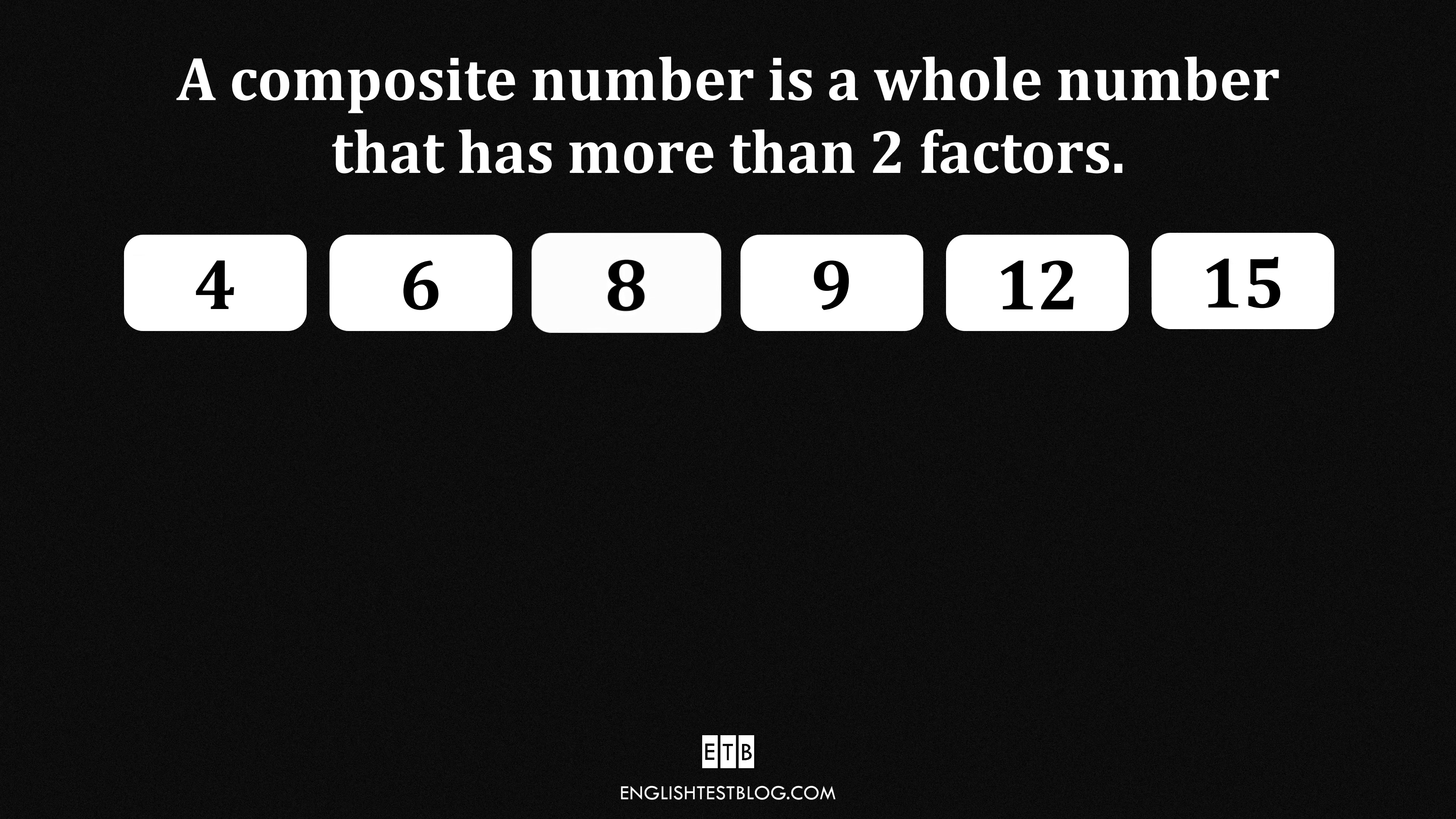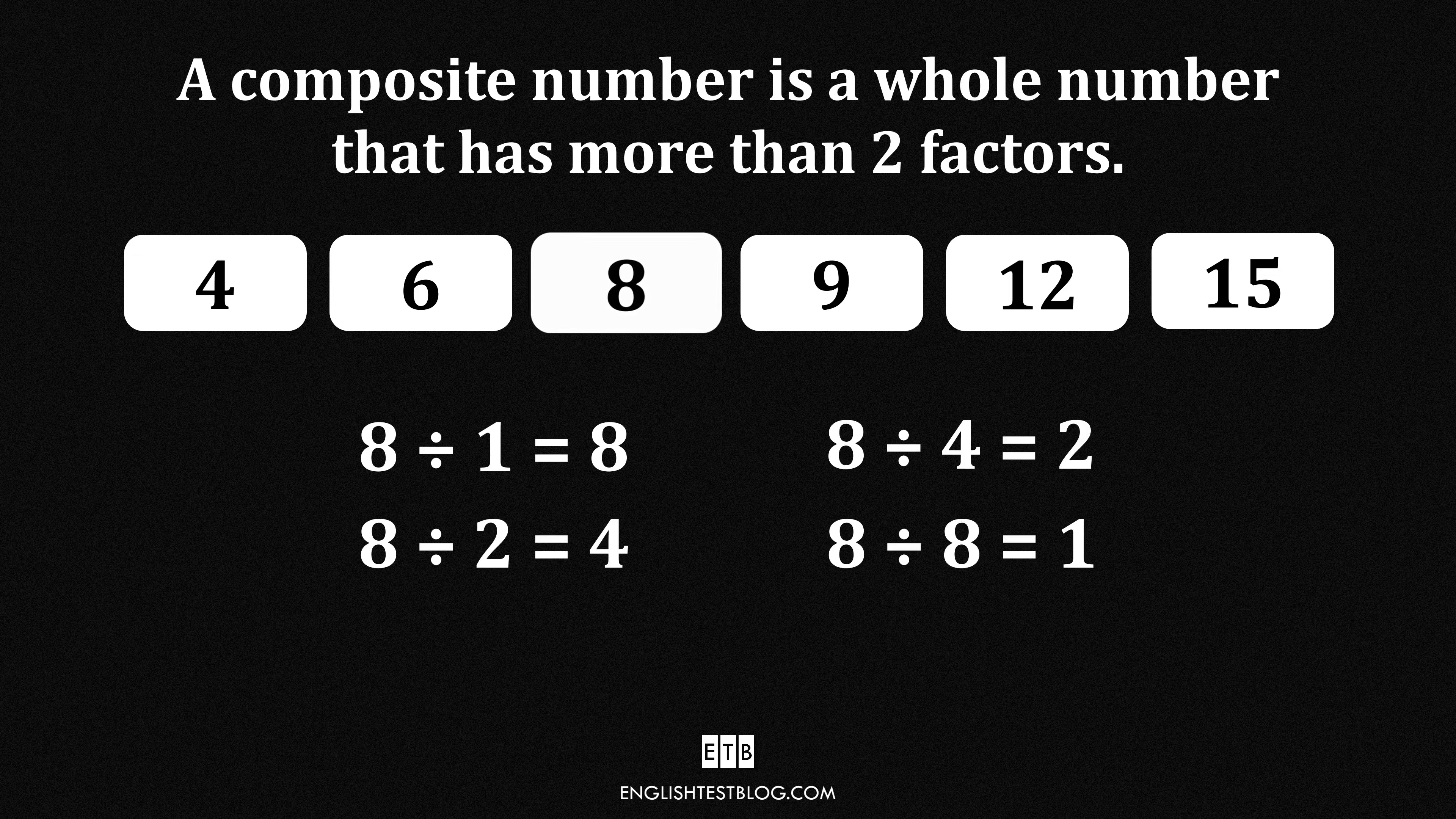8. The number 8 is divisible by 1, 2, 4, and 8. More than two factors mean it is a composite number.